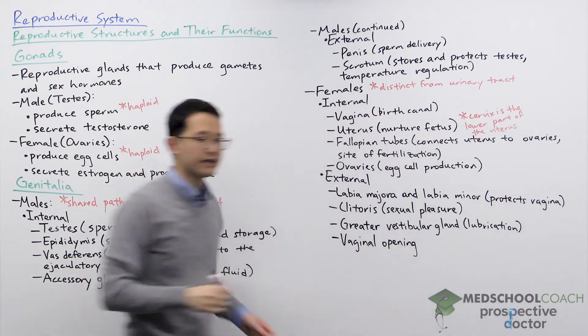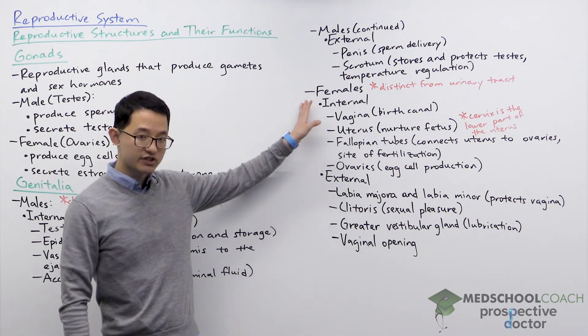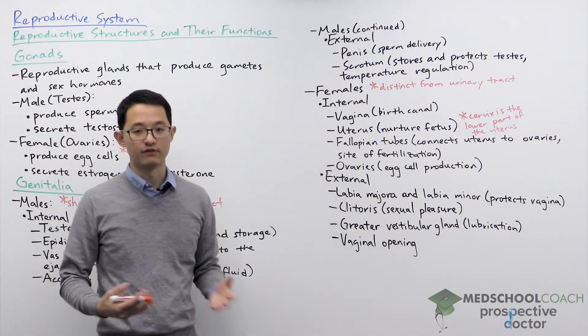In terms of the path that sperm moves in order for fertilization to occur, it's often described as vagina to cervix to uterus and then to the fallopian tubes.